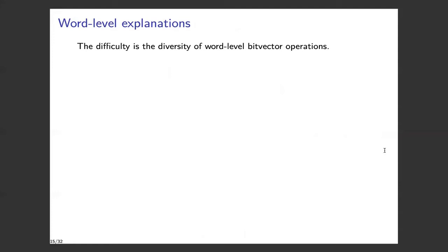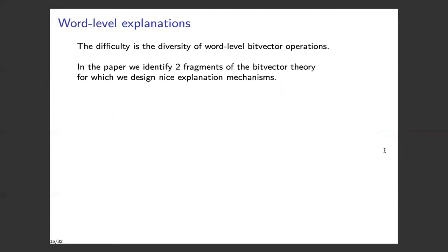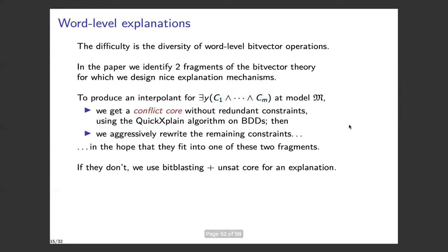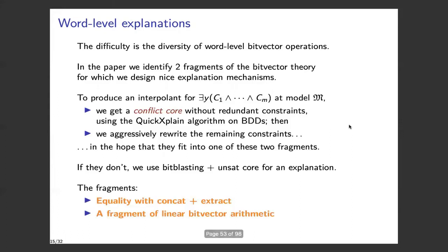The difficulty of doing this is the diversity of word-level bit vector operations. In this paper, we identify two fragments of the bit vector theory for which we design nice explanation mechanisms. To produce an interpolant at model M, we first get a conflict core that removes redundant constraints: among the unit constraints in Y — C1, C2, ..., Cm — there may be redundancy, so we remove those. We use the QuickXplain algorithm on BDDs for this. For the remaining constraints, we aggressively rewrite them in the hope that they fit into one of our two fragments. If they don't fit, we fall back to bit blasting with an unsat core.